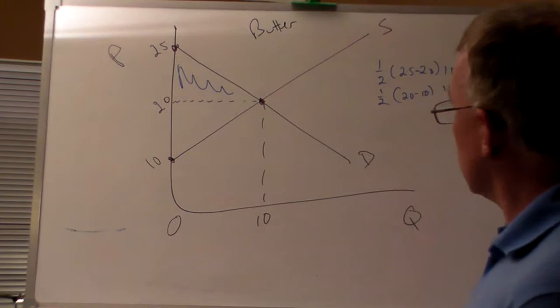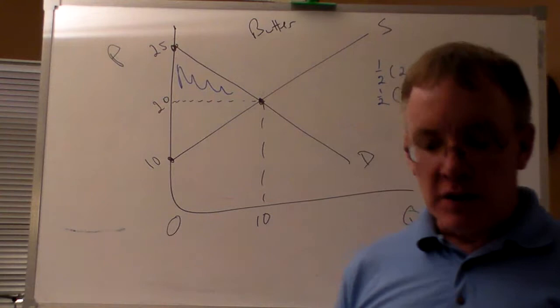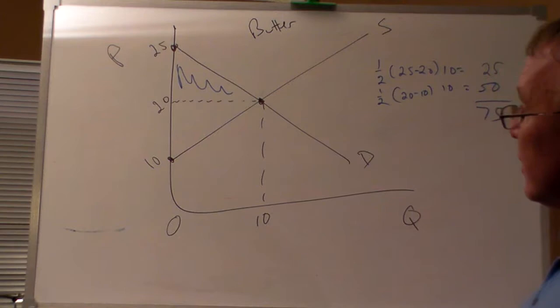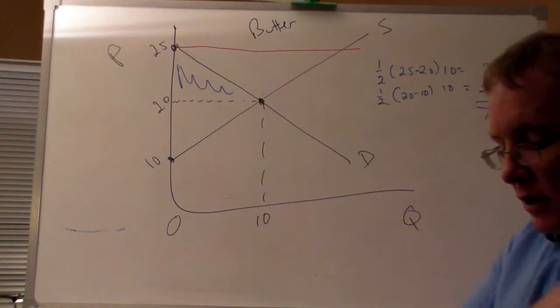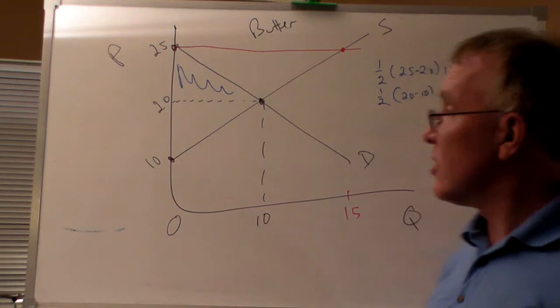So the consumer surplus is 25, the producer surplus is 50, giving a total surplus of 75 in the efficient outcome. But the government could decide to put a price floor and buy all the butter that is produced but not bought by consumers. Let's say they put the price floor at $25. At $25, no consumers are going to want to buy the good, but there will be 15 pounds produced by butter producers.